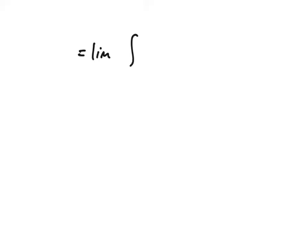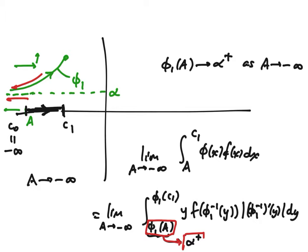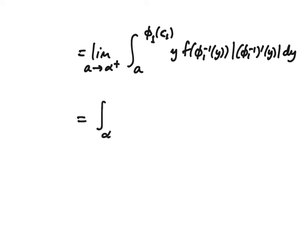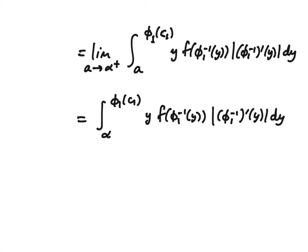That means this limit process can be changed into an equivalent one where we take the limit as a lower limit of integration approaches alpha from above. So we'd have the integral from some lower limit A, approaching alpha from above, up to φ_1 of c_1. This is by definition what we mean by the improper integral with alpha as the lower limit. The integrand is improper at this limit alpha because y never really reaches alpha — φ_1 inverse of alpha doesn't exist, as you can see in the picture: there's no point on the x-axis where the height of φ_1 is exactly alpha.